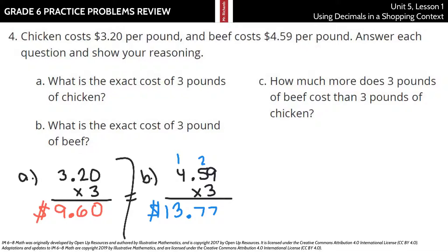How much more does 3 pounds of beef cost than 3 pounds of chicken? Let's take our $13.77 and subtract our $9.60. And we're going to get an answer here. 7 minus 0, 7. 7 minus 6, 1. 13 minus 9 is 4. So the difference here is $4.17.